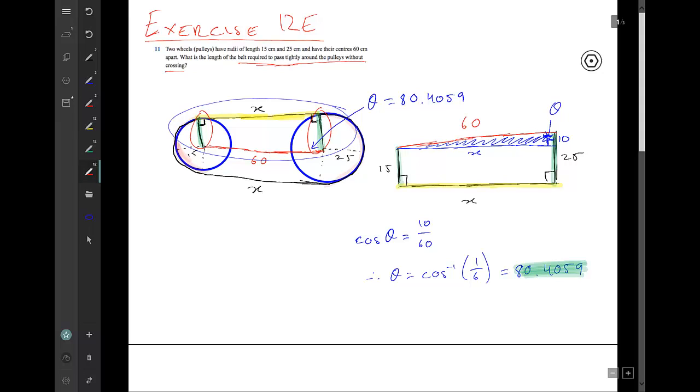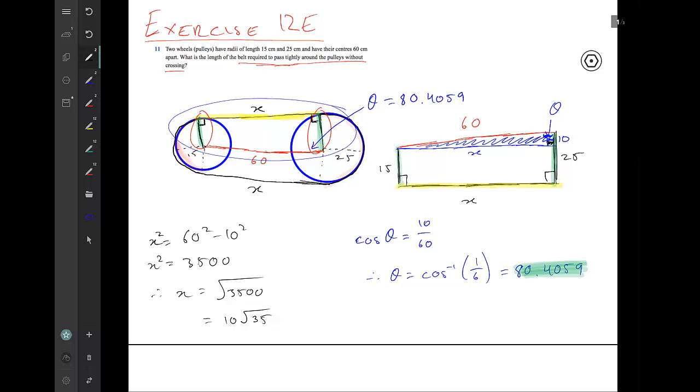So that helps us but not all the way. Finding out x would also be useful because x is this distance here, it's the distance of the belt between the two circles both up the top and equally down the bottom. It won't give us the outsides of the circle but it will give us the two belts in between. Well x is really easy because it's just Pythagoras theorem because again we have a right angle in our triangle.